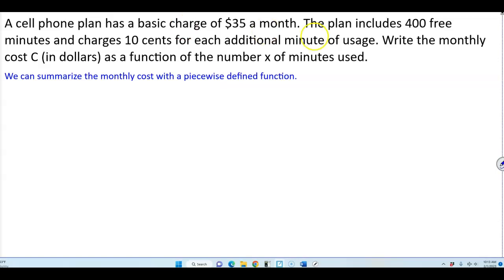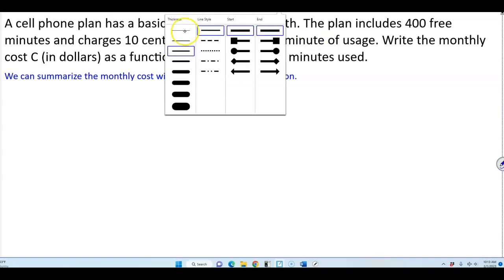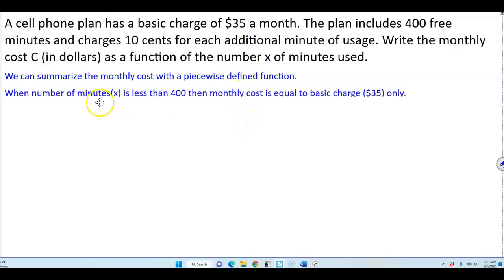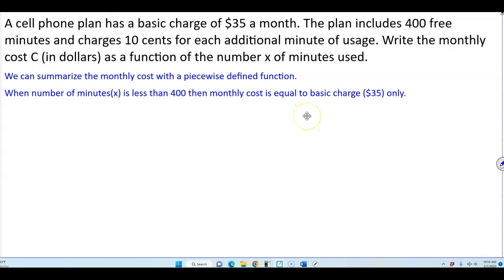Looking at the question: when the number of minutes X is less than 400, then the monthly cost is equal to the basic charge of $35 only.